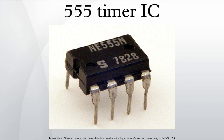Derivatives provide up to four timing circuits in one package. Introduced in 1971 by Signetics, the 555 is still in widespread use due to its ease of use, low price, and stability. It is now made by many companies in the original bipolar and also in low-power CMOS types. As of 2003, it was estimated that 1 billion units are manufactured every year.